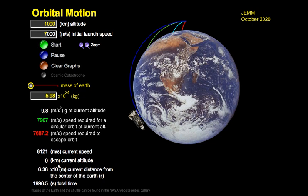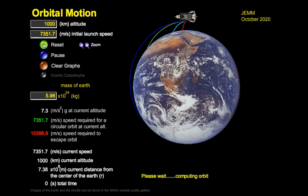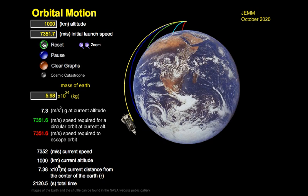If we go just a little faster, and in fact, the number has been written right over here. 7,351.7 meters per second. It's been there all along. And sure enough, the object at that specific speed orbits the earth.